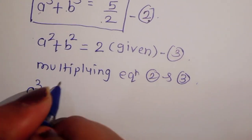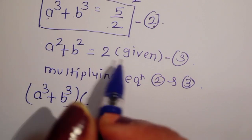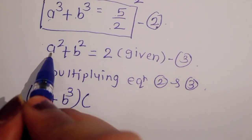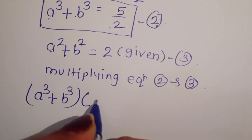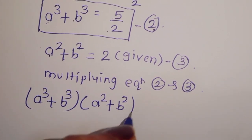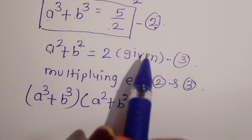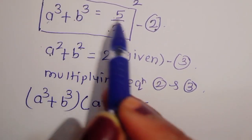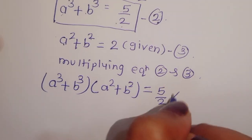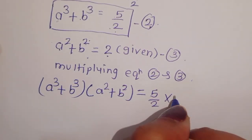Multiplying equation 2 and equation 3: a cube plus b cube multiplied by a square plus b square equals 5 upon 2 into 2.